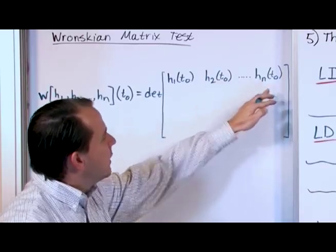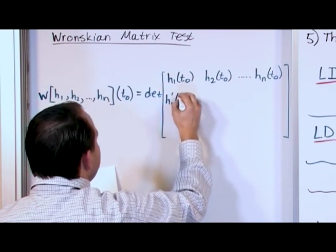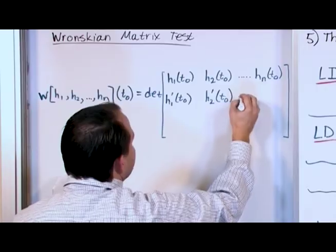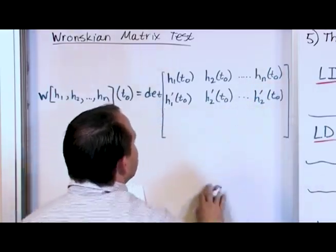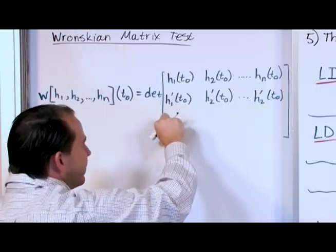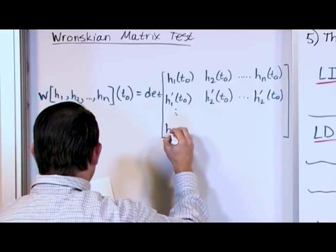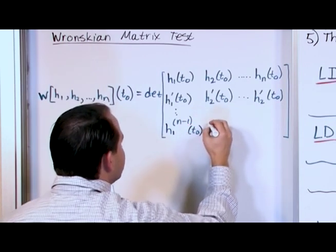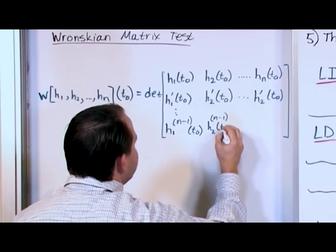Each term in the matrix is evaluated at T₀. The last row for an nth-order system contains the (N−1)th derivative of each function. So for instance: top row is H₁(T₀), H₂(T₀), …, Hₙ(T₀). Second row is H₁′(T₀), H₂′(T₀), …, Hₙ′(T₀). And the bottom row is H₁⁽ᴺ⁻¹⁾(T₀), H₂⁽ᴺ⁻¹⁾(T₀), …, Hₙ⁽ᴺ⁻¹⁾(T₀). That's the Wronskian matrix, and it looks intimidating in textbooks, but it's actually straightforward.